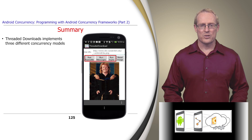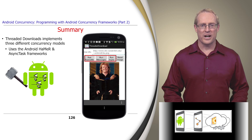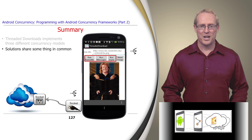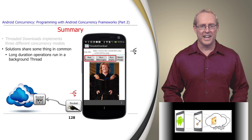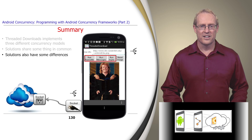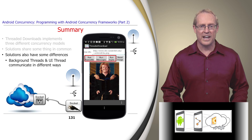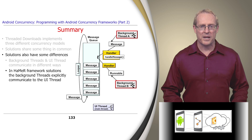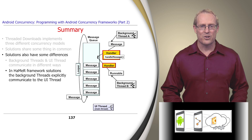In summary, the Threaded Downloads application demonstrated how to implement three concurrency models using the Android Hammer and AsyncTask frameworks. The solutions shared some things in common. For example, all three used a background thread to connect with the remote server and download a file, which are long-duration operations that shouldn't run in the user interface thread. Likewise, all three solutions use the user interface thread to perform short-duration operations, such as showing and dismissing progress dialogs and displaying the image on the screen. However, the solutions also have important differences. The background threads and user interface thread in each model communicate in different ways. The first two solutions are based on the Hammer framework, where application code in a background thread explicitly communicates to the user interface thread by posting a runnable command or sending a message object to a handler associated with the user interface thread. These handlers then process what they receive in the context of the user interface thread.